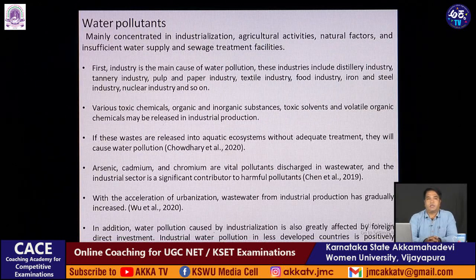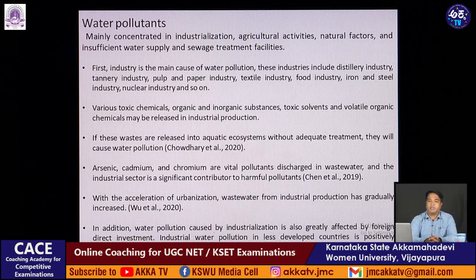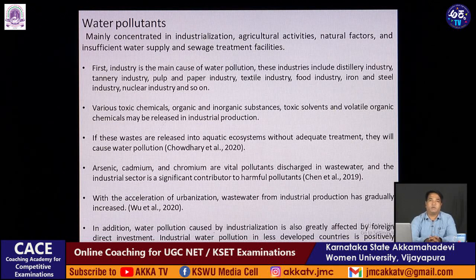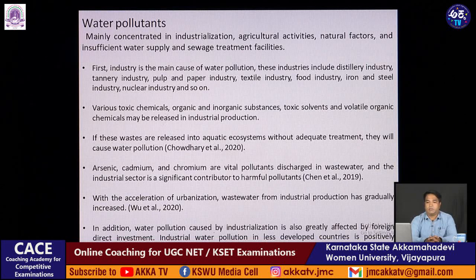Water pollution is mainly concentrated around industrialization, agricultural activities, natural factors, and inefficient water supply and sewage treatments. Industries — including tanneries, pulp and paper industries, distilleries, and food industries — are the main cause of water pollution, releasing toxic chemicals into water reservoirs. Various toxic chemicals, organic and inorganic substances, and solvents are released from industry into water bodies. If these wastes are released into the aquatic ecosystem without adequate treatment, they will cause water pollution. Arsenic, cadmium, and chromium are vital pollutants in wastewater, with industrial outputs as significant contributors.